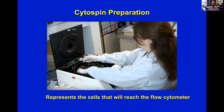We also like to make a cytospin preparation after processing, because this represents the cells that will reach the flow cytometer. Some fragile cells, large cells — some things tend to get lost between the specimen and the final cytospin prep, and that is good to know.